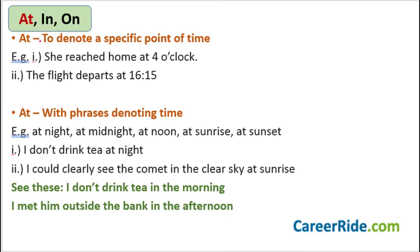The first set of words is 'at,' 'in,' and 'on.' The first word we are going to discuss is 'at.' Now, 'at' is a preposition that we use to denote a specific point of time. So whenever we are talking about a specific time on the clock, we use the preposition 'at.' For example, 'She reached home at four o'clock' — here I'm talking about a specific time on the clock, that is four o'clock.